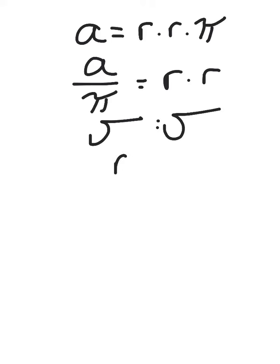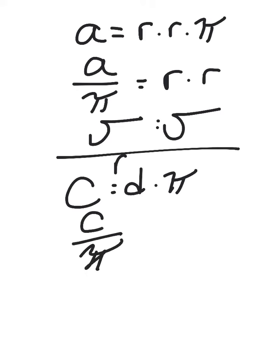For circumference, you take circumference equals diameter times pi. Or if you know the circumference, circumference divided by pi will give you the diameter. And the diameter, half of the diameter, is the radius.